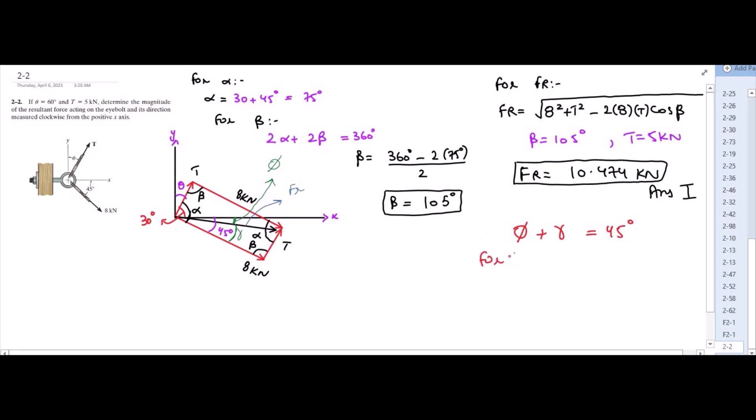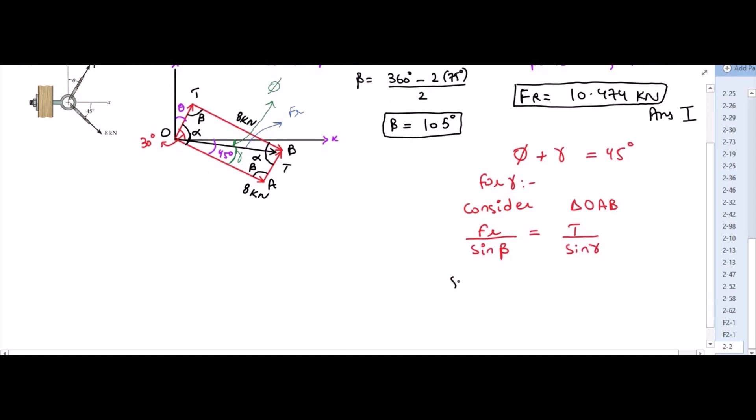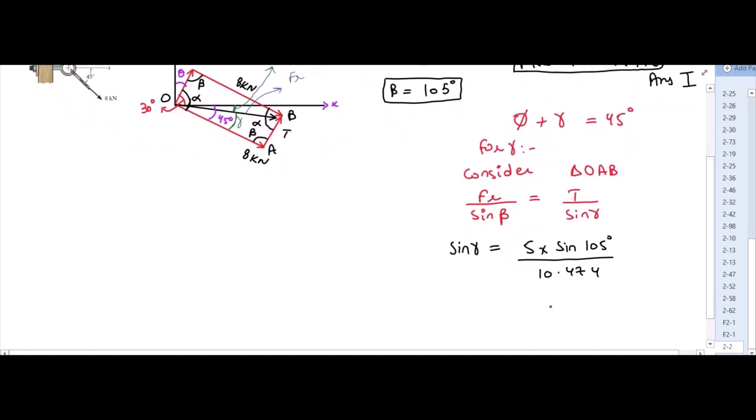For gamma, consider triangle, let us call this O, this is A and this is B. So consider triangle OAB. For gamma we could apply the sine law. So we have FR over sine beta is equal to P over sine gamma. So sine gamma is equal to T which is 5 into sine beta which is 105 divided by FR which is 10.474 kN. So from here gamma is equal to 27.46 degrees.